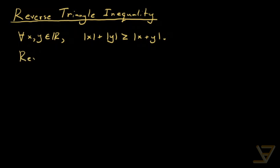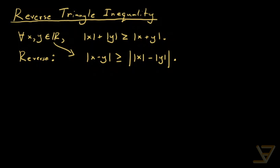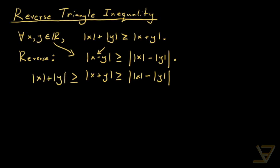The reverse says something slightly different. It says that for all real x and y, we have the absolute value of x minus y is greater than or equal to the absolute value of x minus the absolute value of y. By replacing the negative y with its opposite, we also get the absolute value of x plus y is greater than or equal to the absolute value of x minus the absolute value of y. So you can see it's going in the opposite direction of the normal triangle inequality.